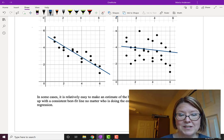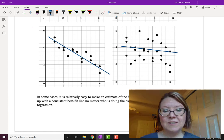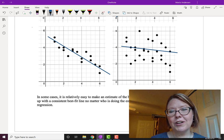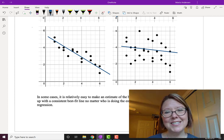Hopefully from these four examples you can tell that in some cases it's relatively easy to estimate a line of best fit but we need a more consistent method to do it especially when the scatter plots become less obvious. For this we need linear regression.